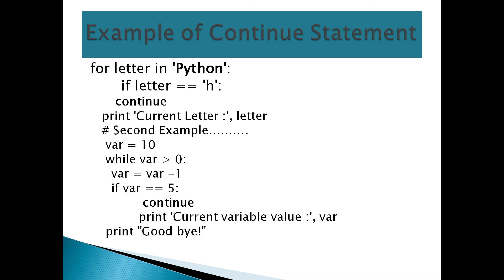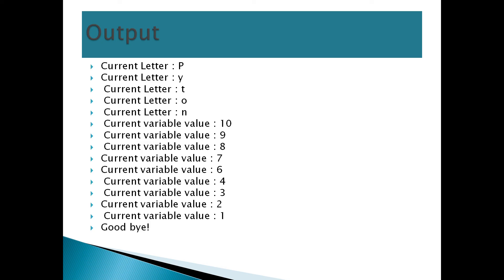Another continue example: var equals 10, while var > 0: var equals var - 1. If var equals 5, continue (skip printing 5). Otherwise print var. Output: 10, 9, 8, 7, 6, 4, 3, 2, 1 — the value 5 is not printed.